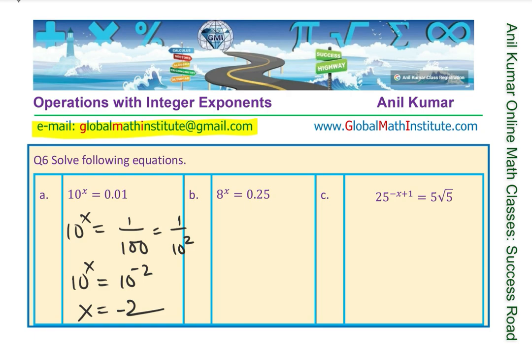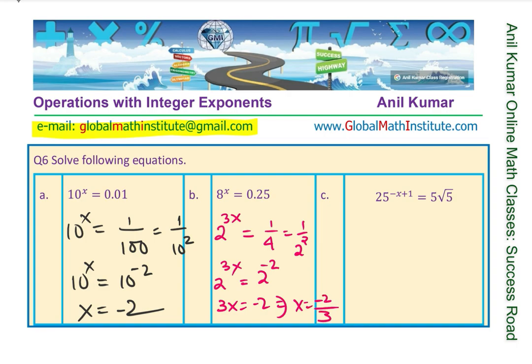Next: 8 to the power of x equals 0.25. We write 8 as 2 cubed to the power of x. And 0.25 is a quarter, which is 1 over 4, which is 1 over 2 squared. So we have 2 to the power of 3x equals 2 to the power of minus 2. Therefore 3x equals minus 2, giving x equals minus 2 over 3.